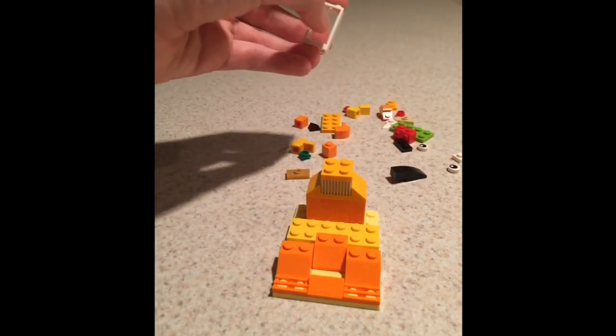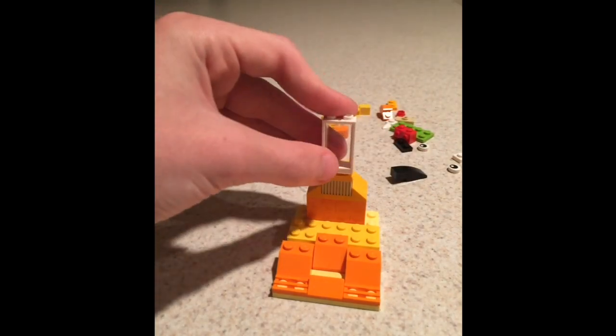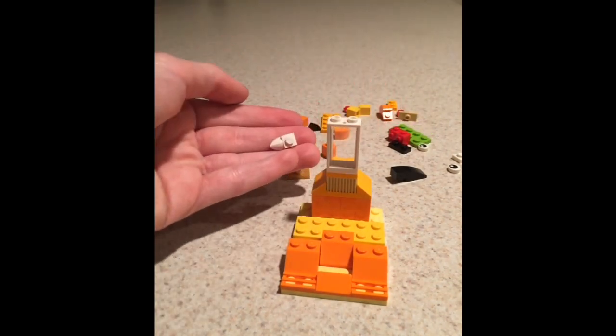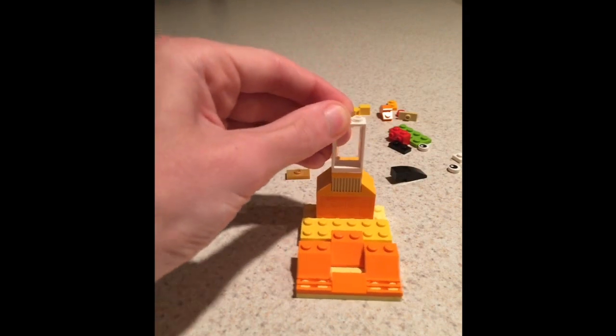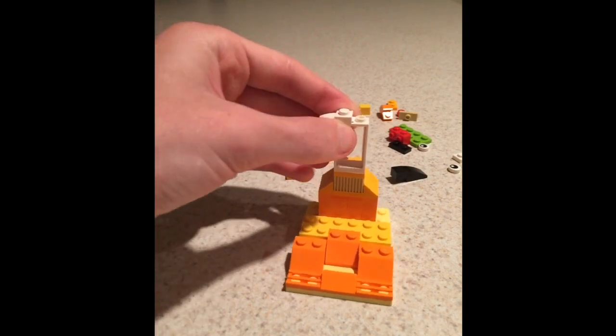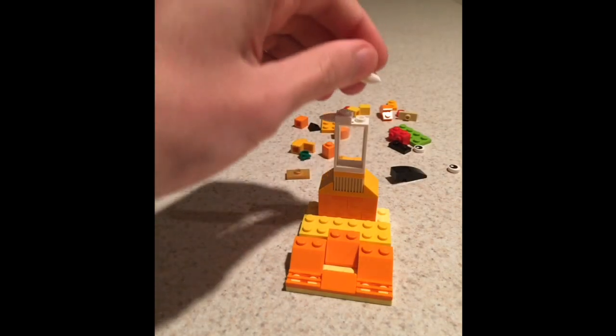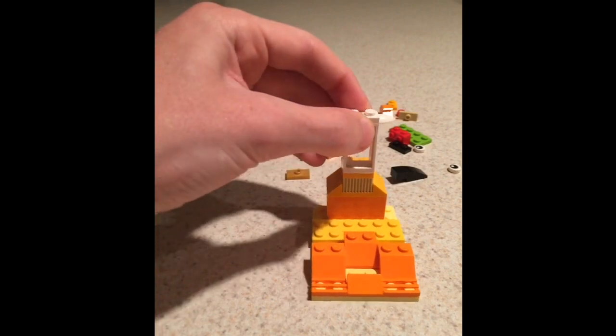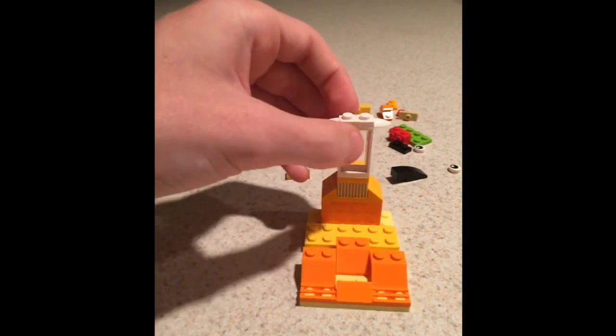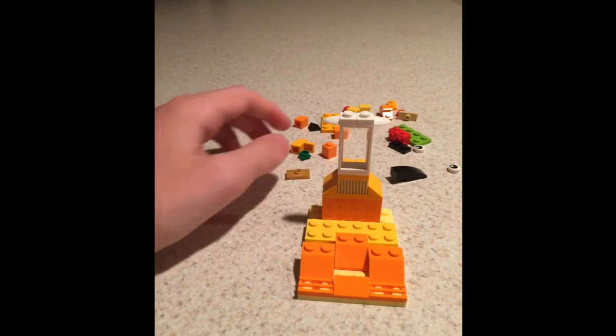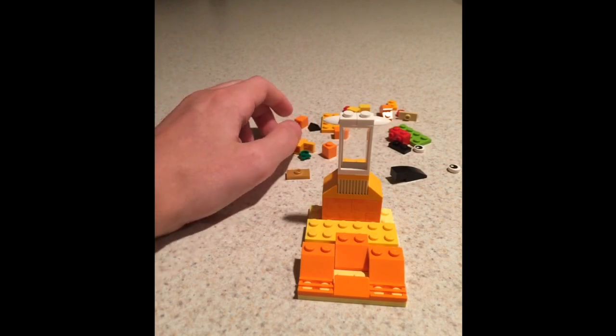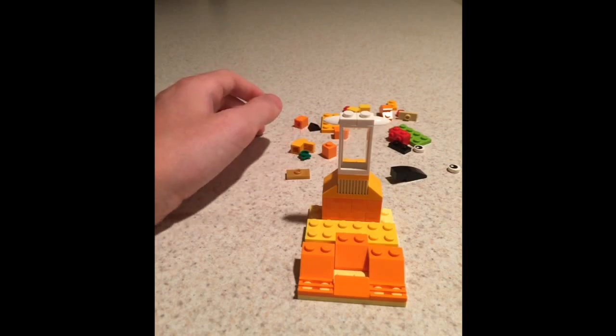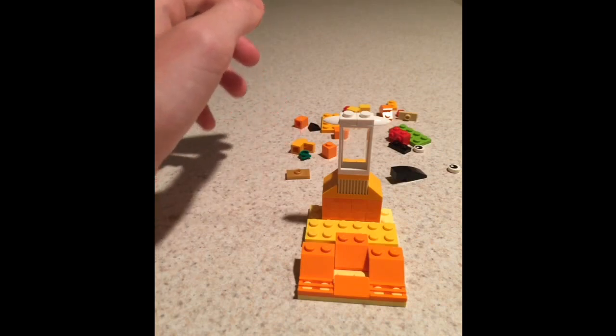Then we're going to take this window piece, which I don't know why this came in an orange set since it's white, but I won't argue. It helps me in the long run. We're going to take these two white tooth kind of pieces. Put those on the top. They aren't needed to be tooth pieces. They just happen to be in the set. You can replace that with a 2x1. I know this probably isn't very interesting to listen to, but it's I guess it's a little more entertaining than just watching me build it slowly.